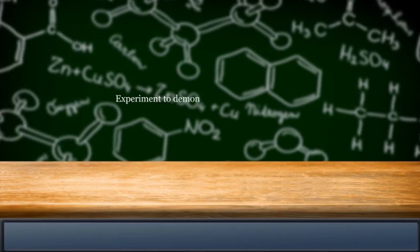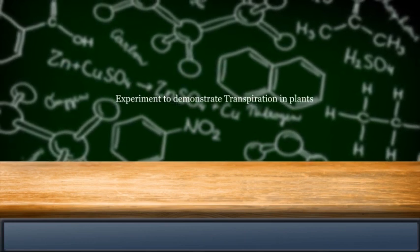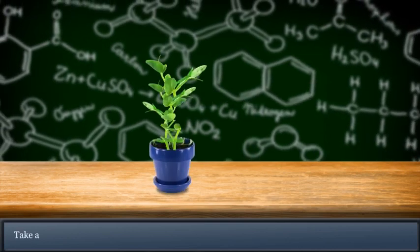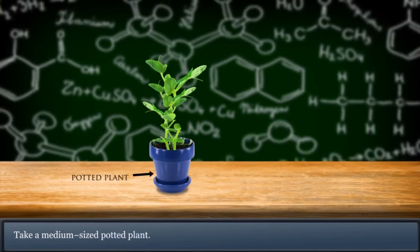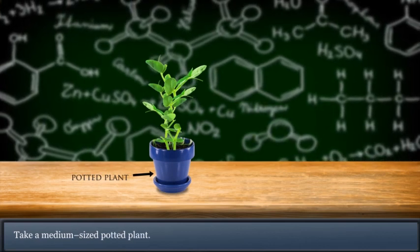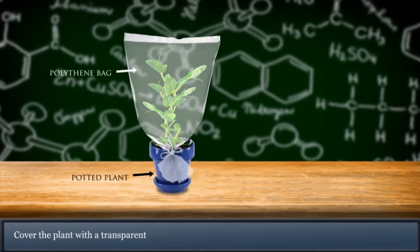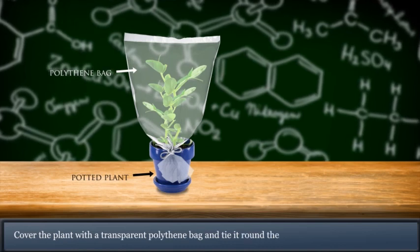Experiment to demonstrate transpiration in plants. Take a medium-sized potted plant. Cover the plant with a transparent polythene bag and tie it around the base of the stem.